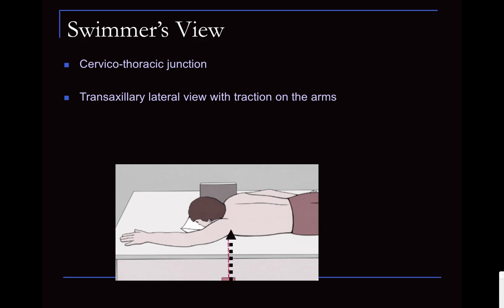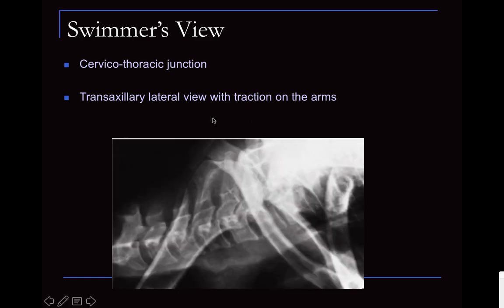The last additional radiograph that may be taken is the swimmer's view, which is a trans-axillary lateral view with the arm abducted. Again, this is not to be done when somebody has acute injury. This concludes the approach to a cervical spine radiograph. We will talk later about thoracic and lumbar spine radiographs and pathologies in subsequent sessions. Thank you, stay safe and take care.